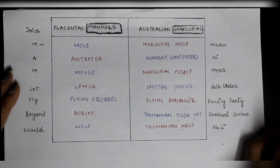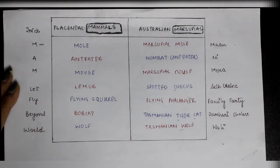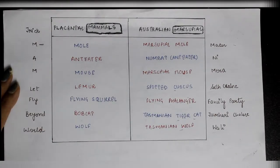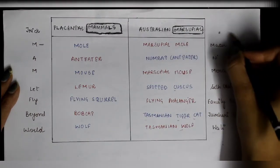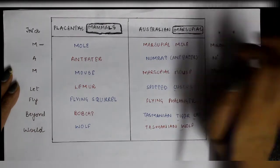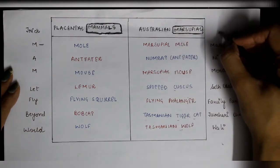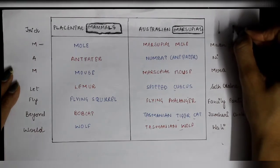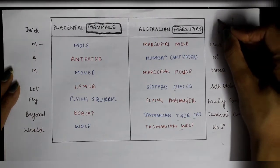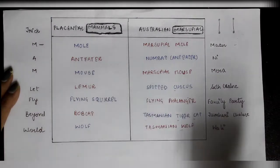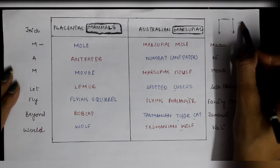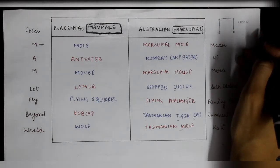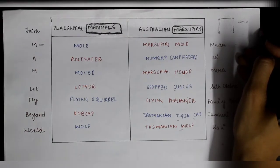These two classes are showing convergent evolution. Convergent evolution is when two organisms start from different types and as they evolve, they become somewhat similar organisms. Previously they were different-looking organisms, but as evolution continued they are showing some similar characteristics.